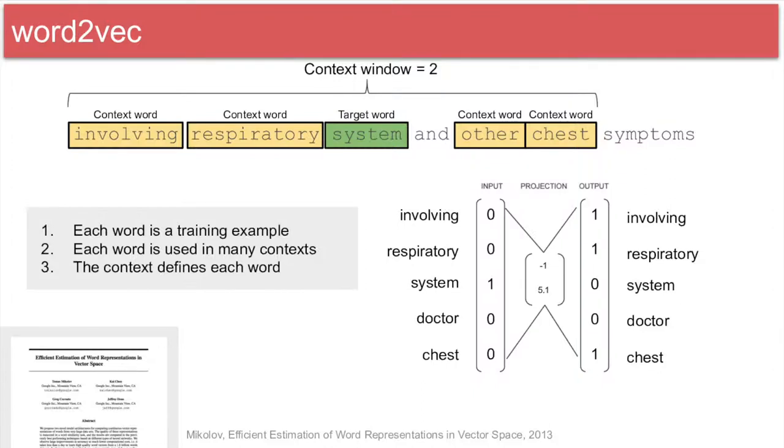First, we will make a one-hot vector representing the target word, and project it down to a 2D representation. Now, the embedding size can vary. Here, we're just doing 2D. Then, we will project it back up to generate the context of that word. This is impossible to do perfectly because a word can have multiple different contexts, but that will be the key to why this method works.